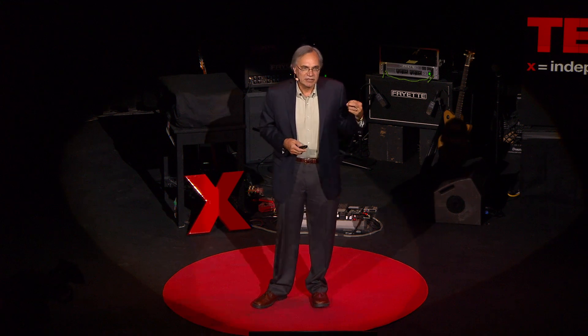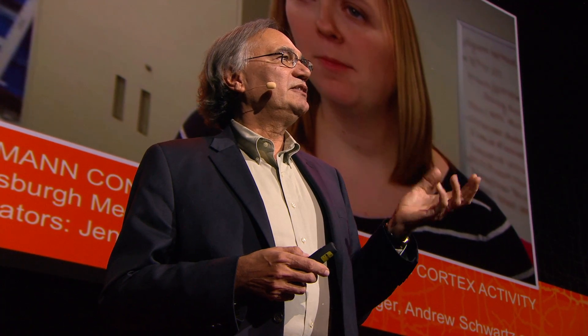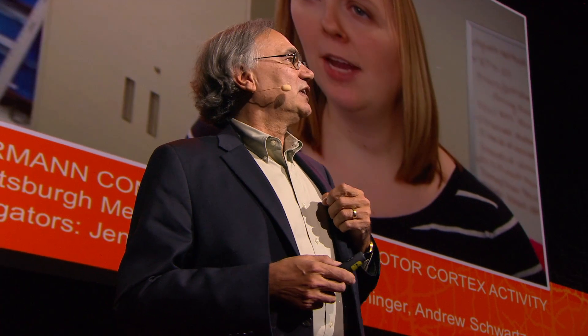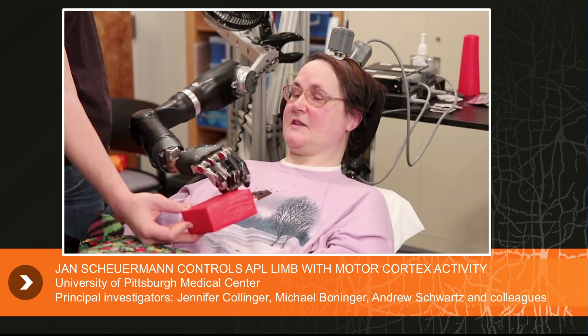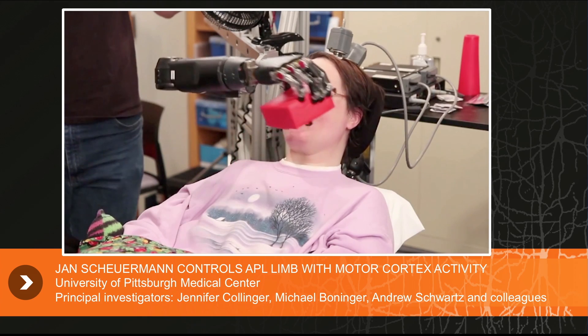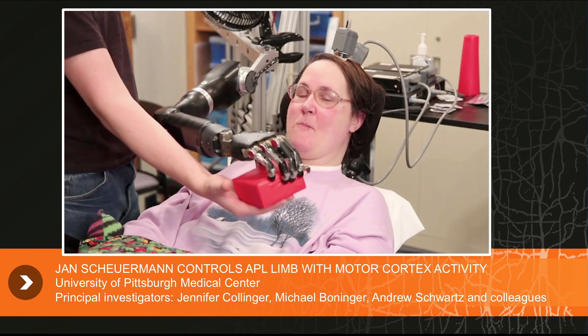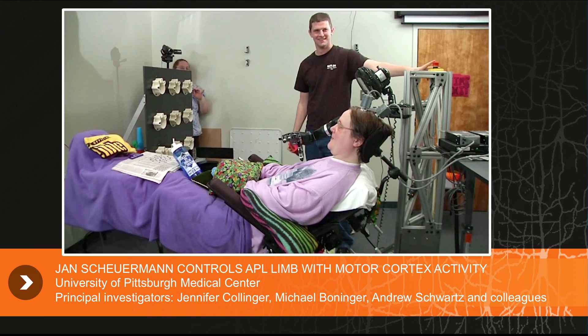As part of this Revolutionizing Prosthetics project, we're working with colleagues at the University of Pittsburgh, and they recently implanted a paralyzed patient, Jan Schauerman, who had spinal cerebellar degeneration. She's completely paralyzed except above her neck. They implanted the motor cortex about a year ago. Jan's goal has really been to feed herself a piece of chocolate. The little square things you see are the cable connectors to the implant in her brain.